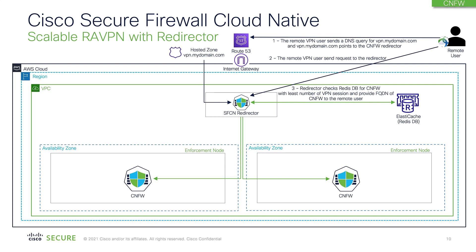In ElastiCache, whenever a new VPN session is added to an enforcement point, we replicate that information in the ElastiCache. So ElastiCache has information about all the CNFWs and how many VPN sessions are being handled by each CNFW. In response to the query from the user, the redirector will then consult ElastiCache and provide the FQDN of the CNFW that has the least number of VPN connections.